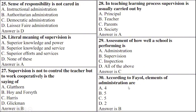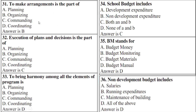According to Fayol, elements of administration are — right option is B: 5 elements. To make arrangement is the part of — right option is A: organizing. Execution of plans and decisions is the part of — right option is A: commanding.